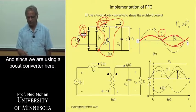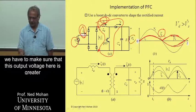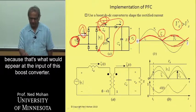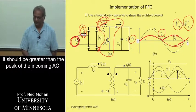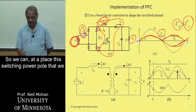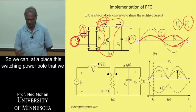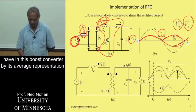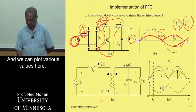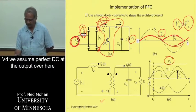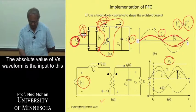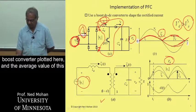Since we are using a boost converter here, we have to make sure that this output voltage is greater than the peak of the incoming voltage, because that's what appears at the input of this boost converter — it should be greater than the peak of the incoming AC voltage for the boost converter to work. We can replace the switching power pole in this boost converter by its average representation as shown in this diagram. VD is assumed to be a perfect DC at the output, and Vs is the input; the absolute value of Vs is the input to this boost converter, plotted here.